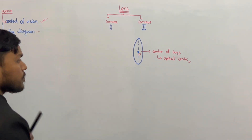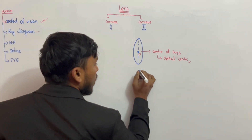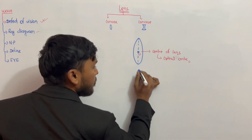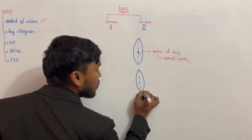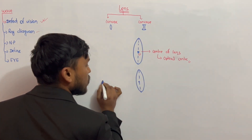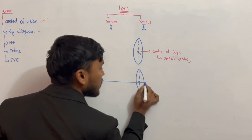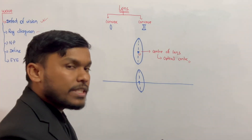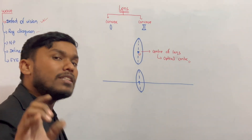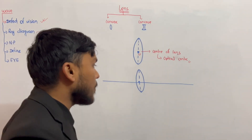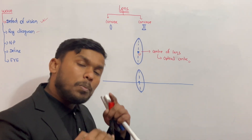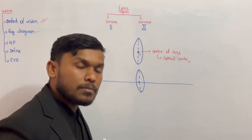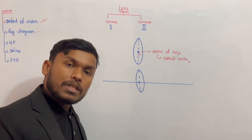The next term is called the principal axis. The principal axis is the imaginary line which divides the lens into two equal halves. If we are talking about the lens in two parts, we can divide the line into the principal axis.